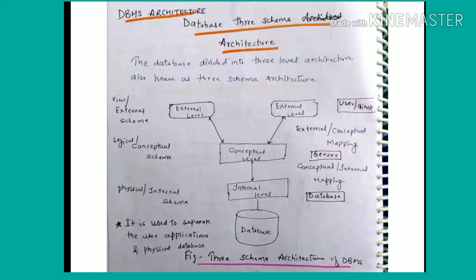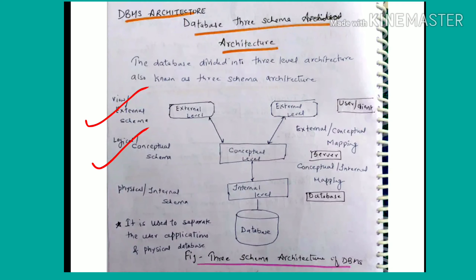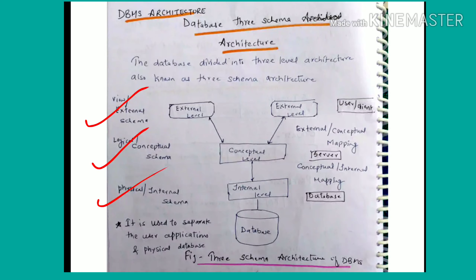In the previous video, I told you that there are three types of schema: View and External Schema, Logical and Conceptual Schema, and Physical and Internal Schema. So on the basis of DBMS, the architecture of DBMS has been designed.